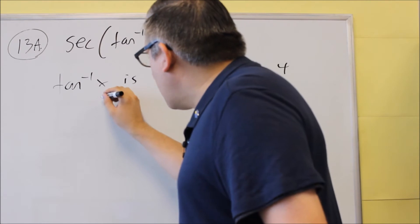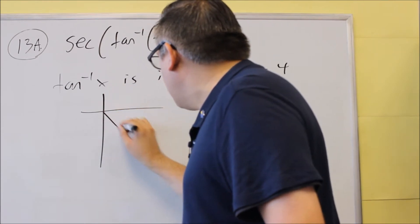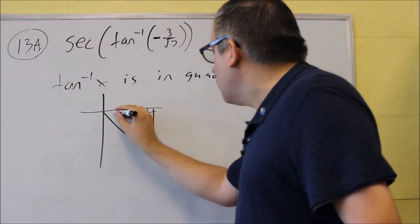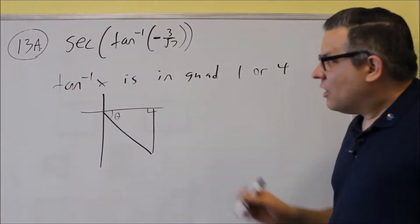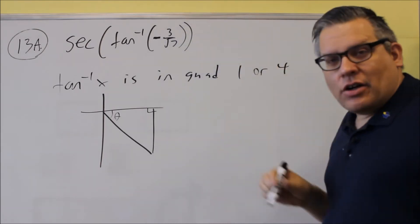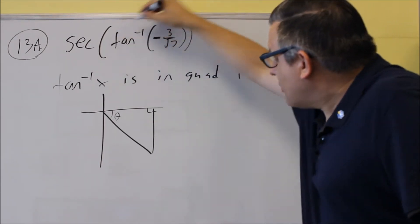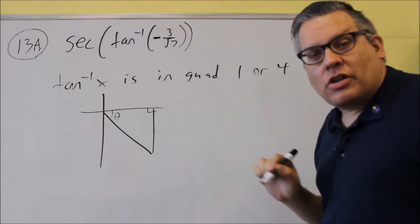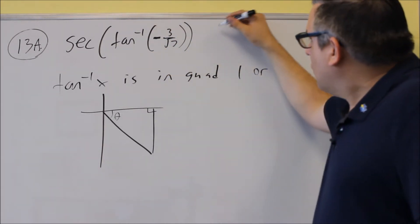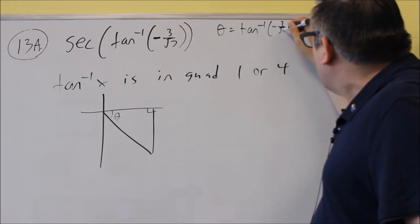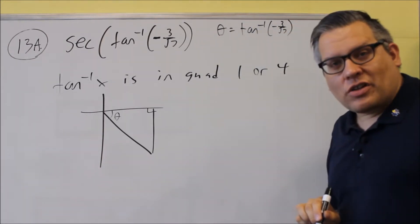So we're going to draw the triangle in the fourth quadrant like that. Your angle would be right here. We can say that because the inverse will always give you an angle, we can say that theta is equal to inverse tangent of negative 3 over square root of 7, just like that.